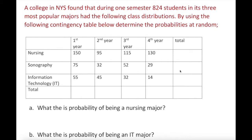The first thing we need to do is find the totals. For example, if the question asks about the probability of being a nursing major, we need the nursing total divided by the overall total. We add across each row to get the row totals, and we add down each column to get the column totals.